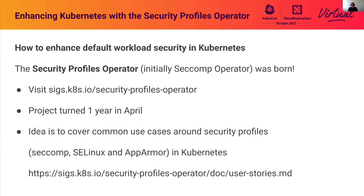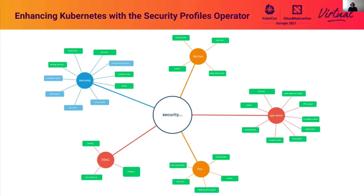The project already turned one year in April, with two releases and plans for the next one containing many new features. The idea is to cover common use cases around security profiles — SecComp, SELinux, and AppArmor — all bundled into Kubernetes. We have a list of user stories covering the three perspectives: administrators, site reliability engineers, and application developers. The project has a huge roadmap but remains tightly scoped, currently focusing on feature completeness for SecComp and SELinux. Now let me pass over to Colleen to explain how it works in detail.